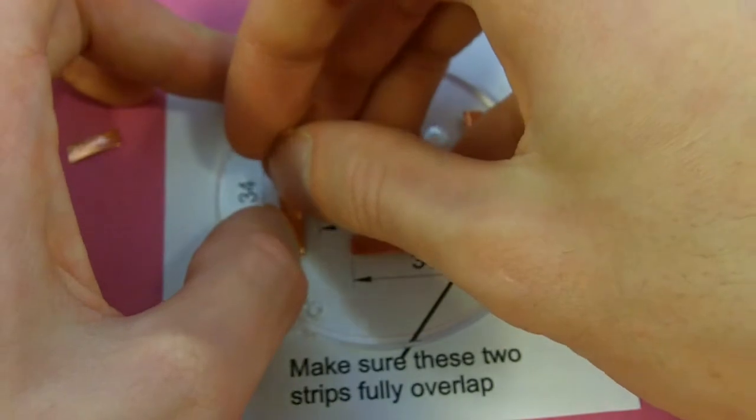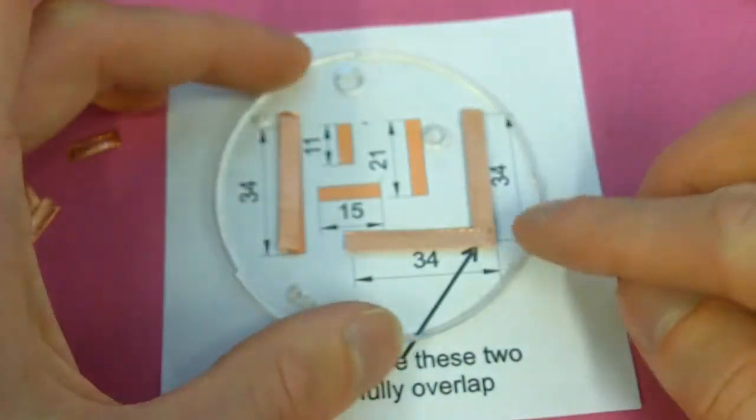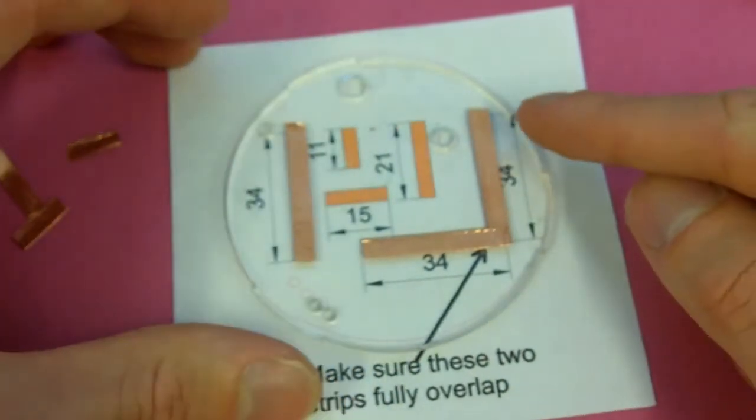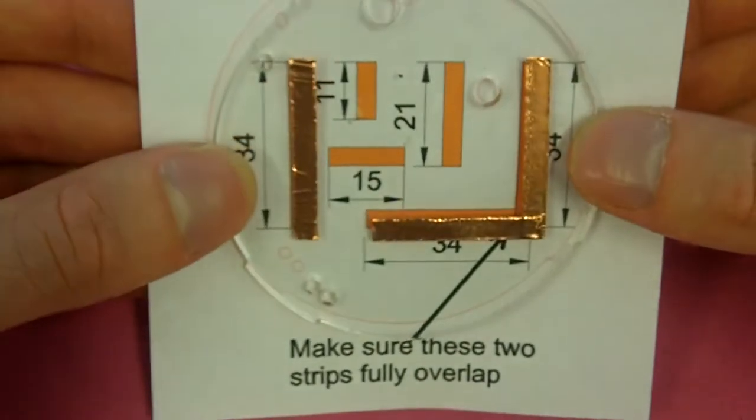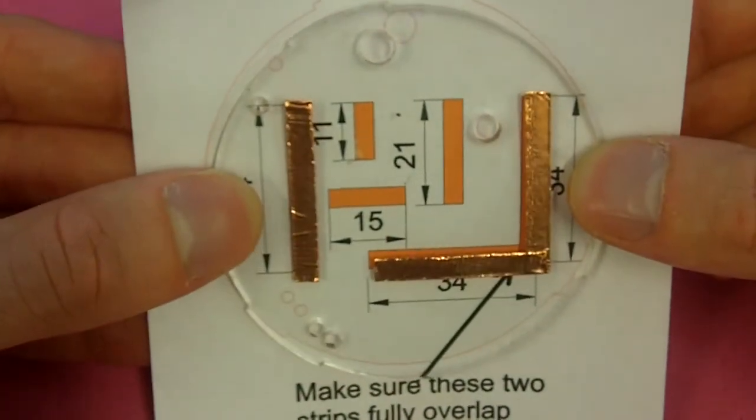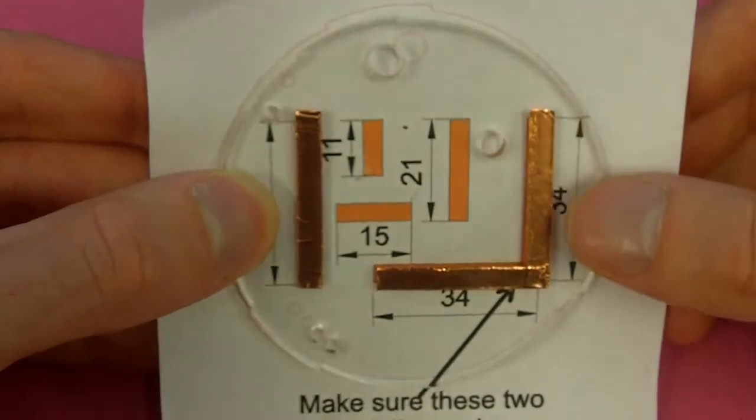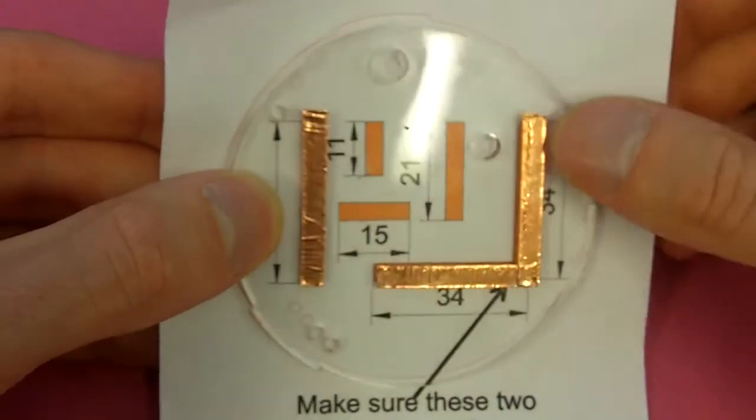Just try and stick it down, like so. Make sure when you do it, you push them all down. Now, you can see here, although the bits of copper are nicely aligned, it's moved slightly, so the circles aren't quite perfect. Don't worry about these circles - the most important thing is that you get all of the tape in the right place.